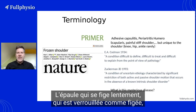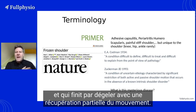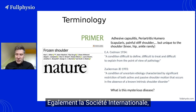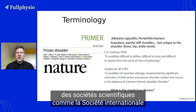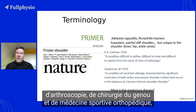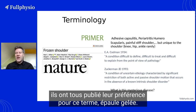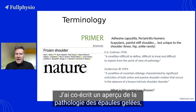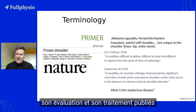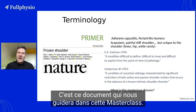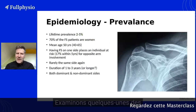'Frozen shoulder' could well represent what the patient feels — the shoulder that slowly freezes, that is locked as frozen, and that is eventually thawing with partial recovery of motion. International scientific societies such as the International Society of Arthroscopy, Knee Surgery and Orthopedic Sports Medicine, and the American Shoulder and Elbow Surgeons Society have all published their preference for this term. Not so long ago, I co-authored an overview of frozen shoulder's pathology, its assessment and treatment, published in Nature Reviews Disease Primers, and it will be this paper that will guide us through this masterclass.